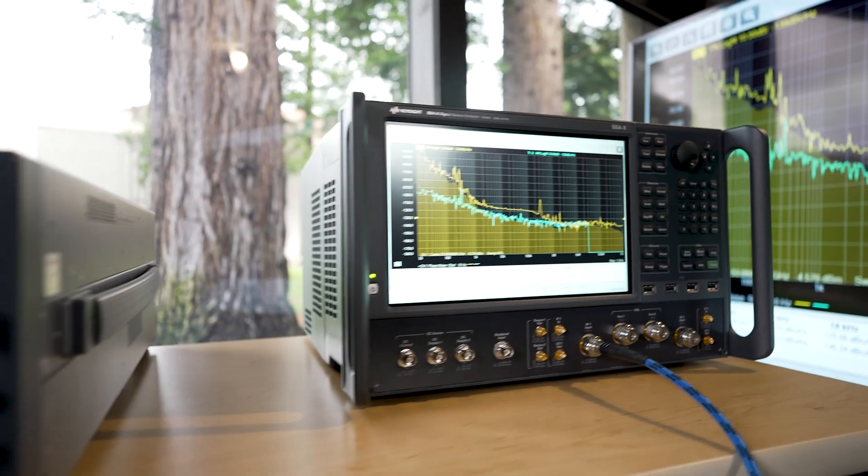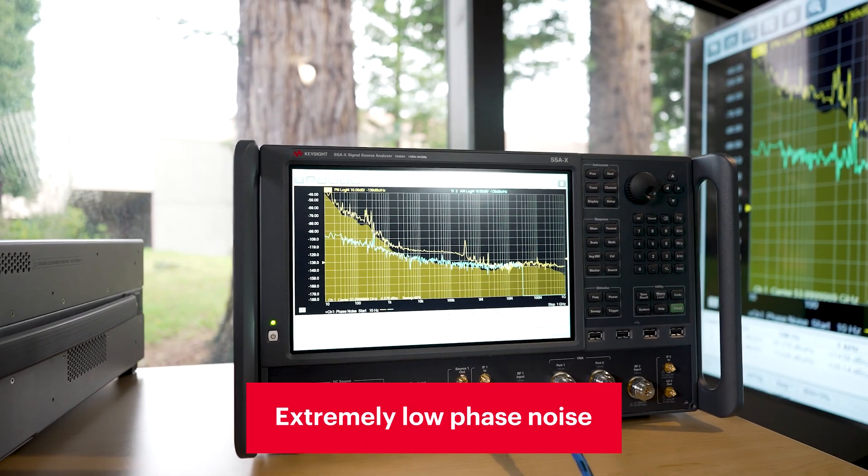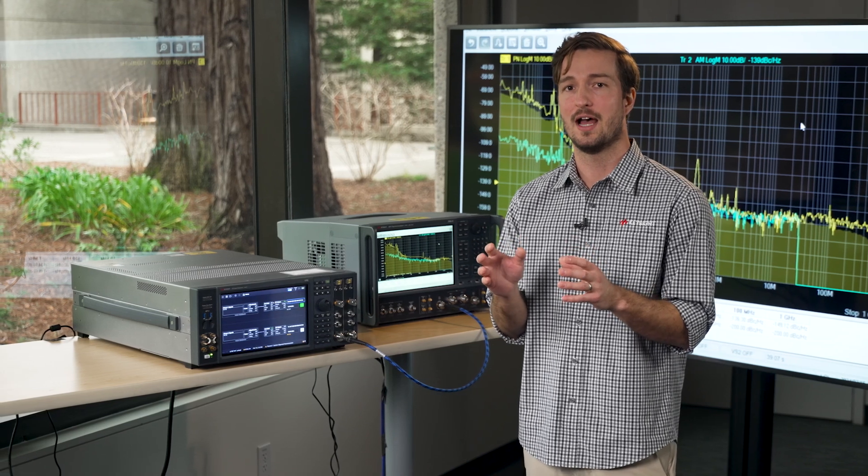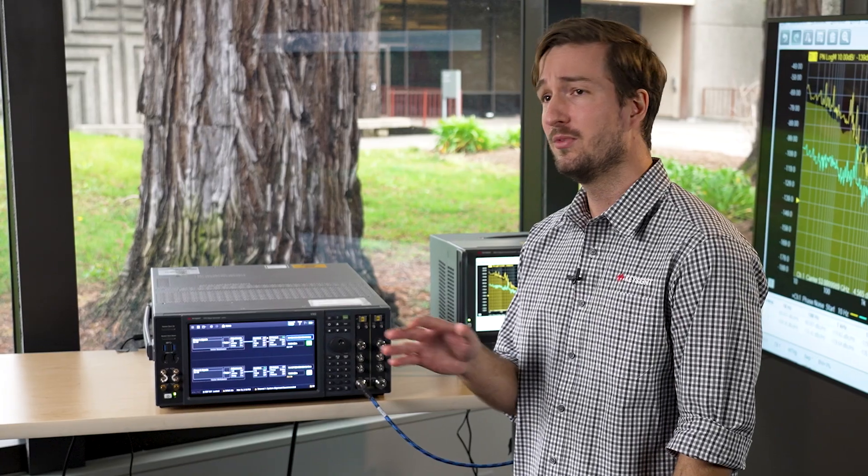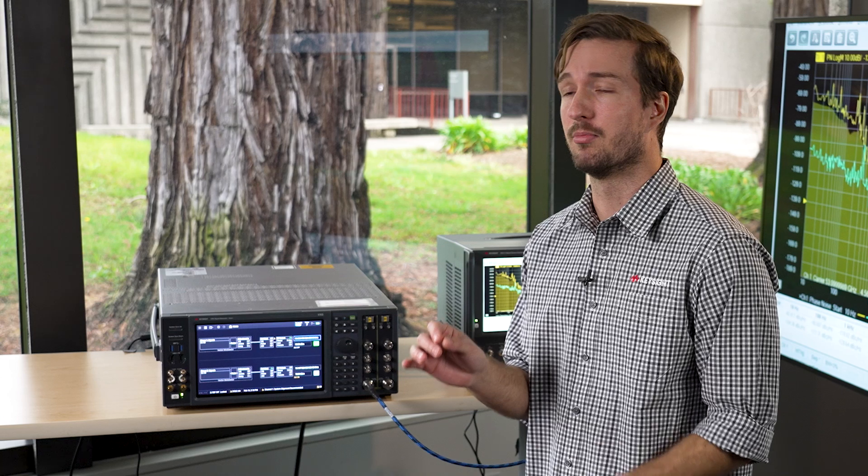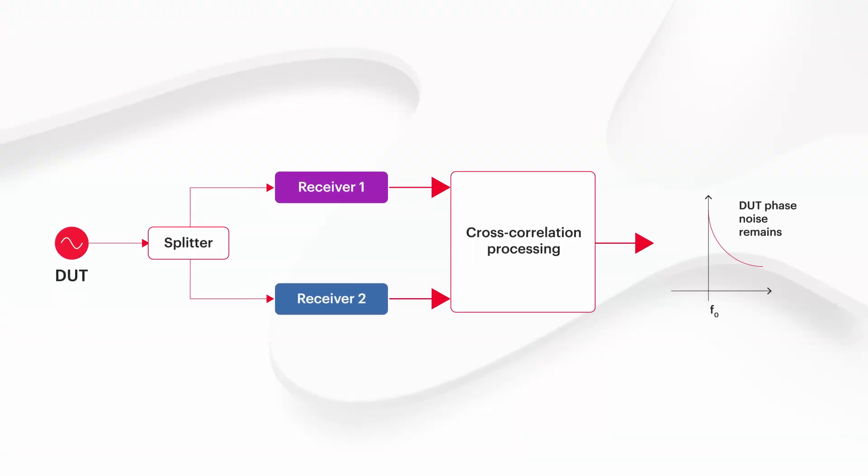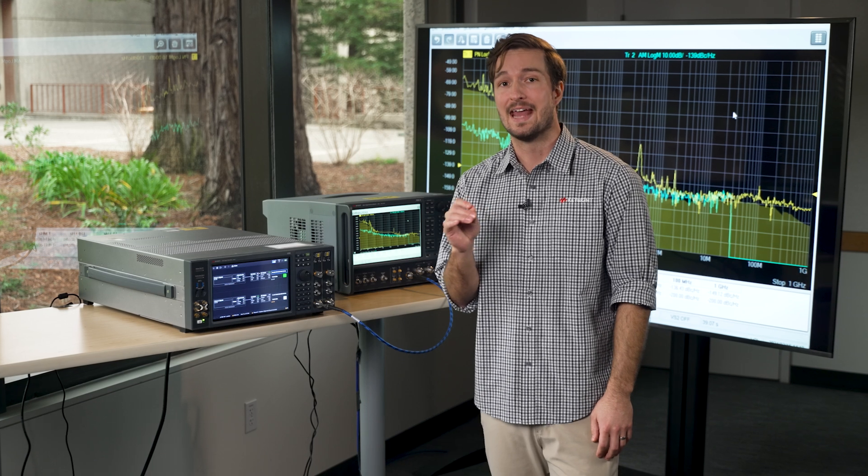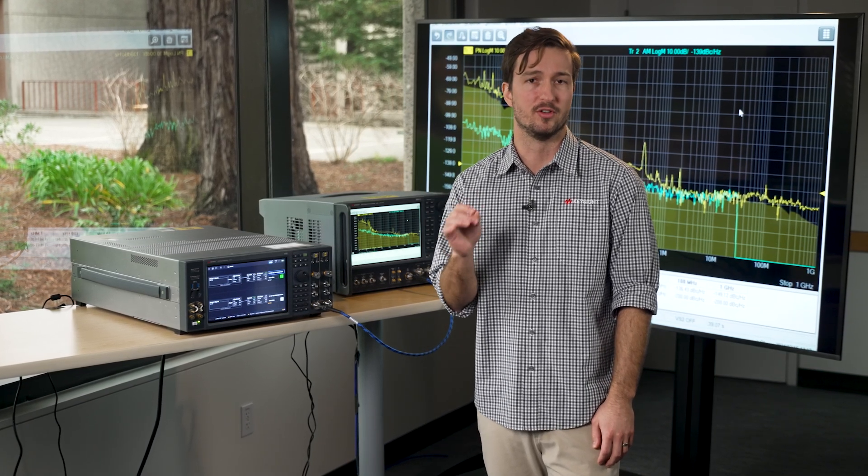The VXG has extremely low phase noise. In order to measure devices like the VXG, the SSA-X needs very high measurement sensitivity. This measurement sensitivity is achieved using a process called cross-correlation, where uncorrelated noise from two independent LOs and receivers is removed and the correlated noise from the DUT that is common to both receiver paths is retained. This removes the instrument noise from the measurement and allows sensitivity down to the KT thermal noise floor.